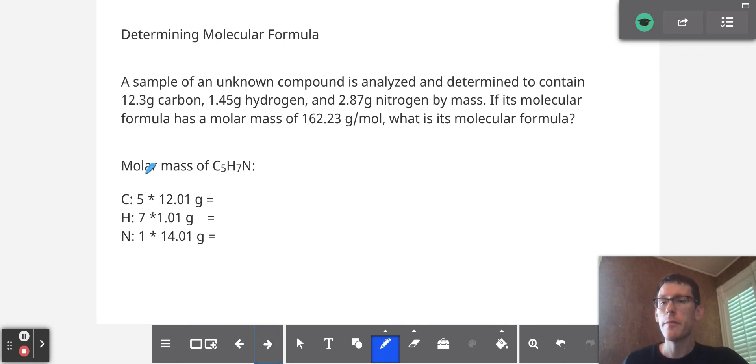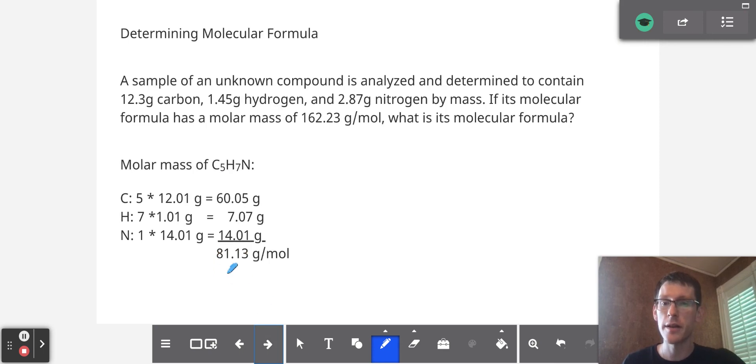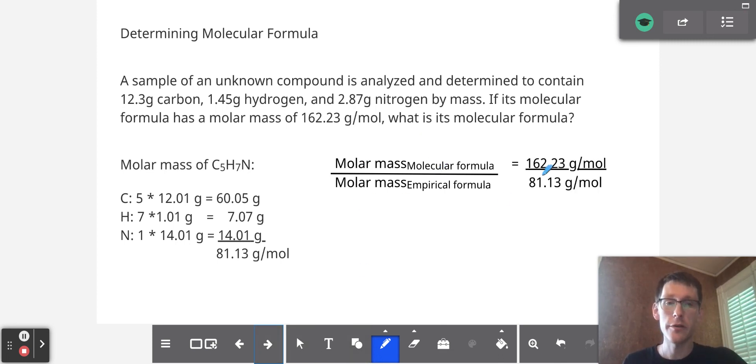The molar mass of the empirical formula is 81.13 grams per mole. Now we can take the ratio of the molar mass of the molecular formula to the molar mass of the empirical formula, which is 162.23 grams per mole over 81.13 grams per mole.